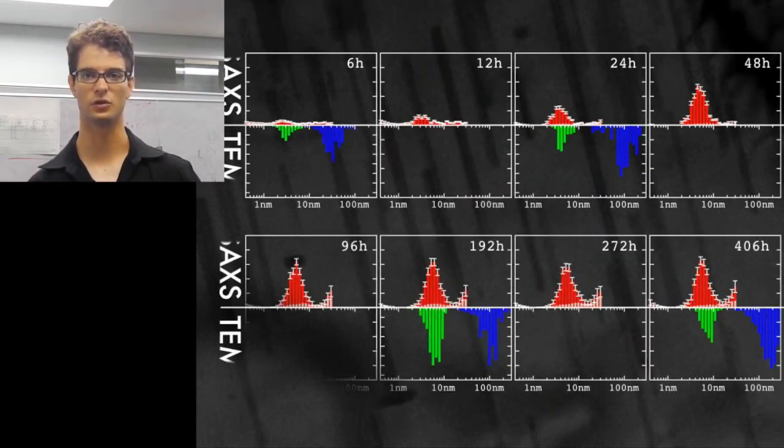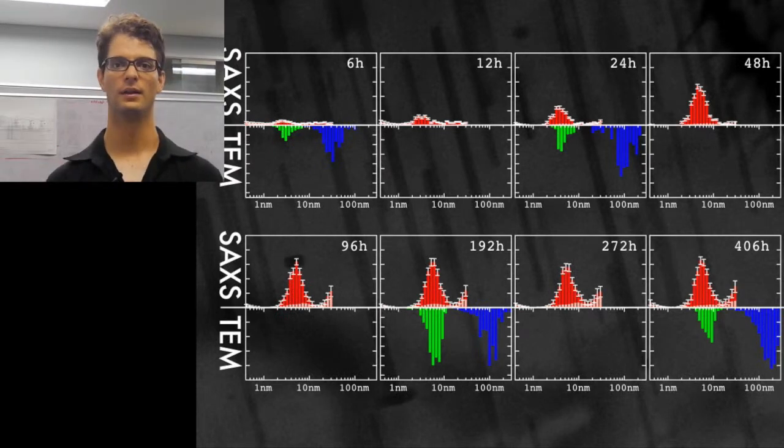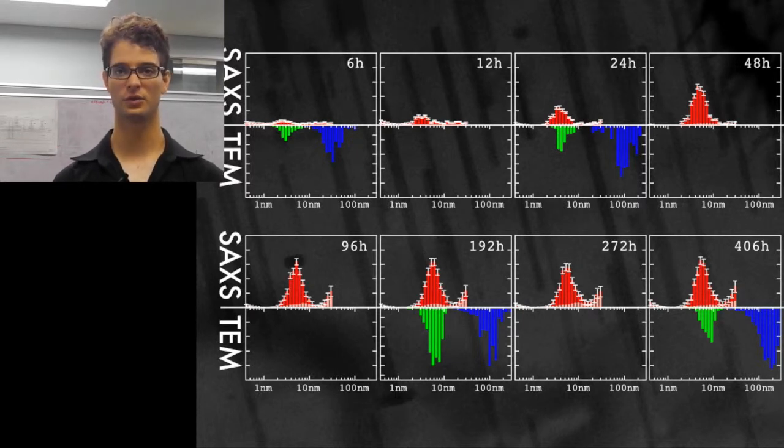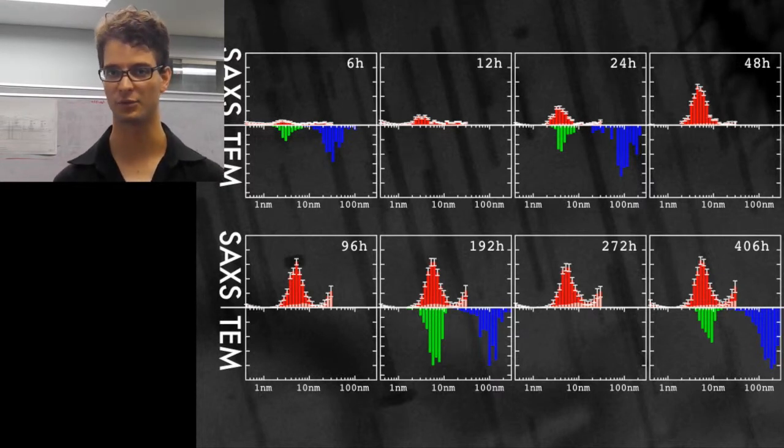What we get out of this is a lot of size distributions. The X-ray scattering size distributions are shown in red, and the size distributions determined by electron microscopy are shown in green and blue for the radius and length distribution respectively.